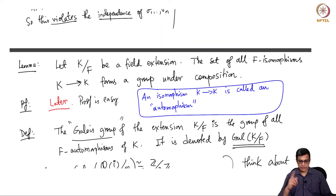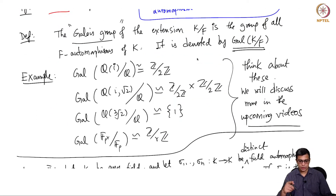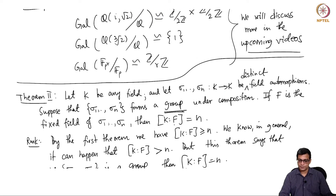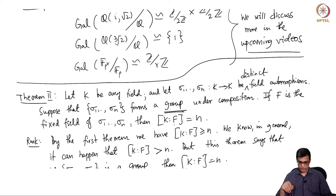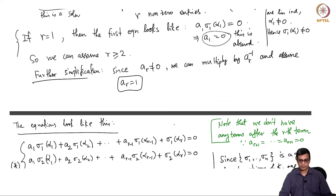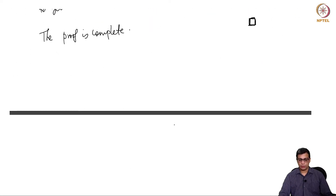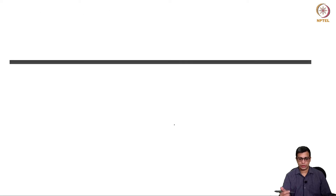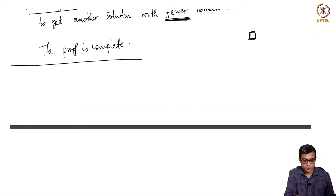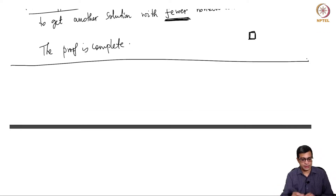But if the fields are equal, namely K equal to L, and the homomorphisms you are considering are actually automorphisms — there are n distinct ones forming a group — then the degree of K over the fixed field is exactly equal to n. In this video we are going to start defining Galois extensions.